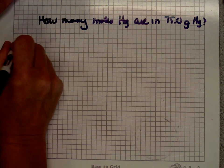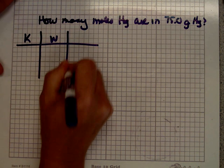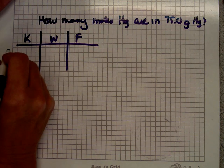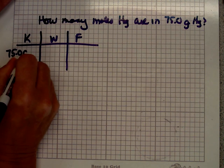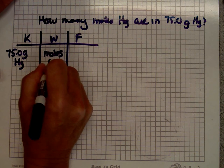The way that I like to do these problems is I always make myself a special chart. I call it my know, want, and formula grid. In the left-hand column I list everything that I know. For instance, I know it's 75 grams of mercury. What do I want to know? I want to know moles of mercury.